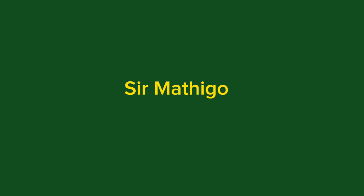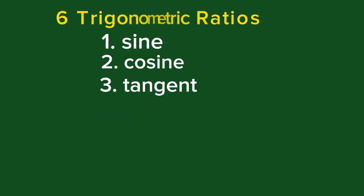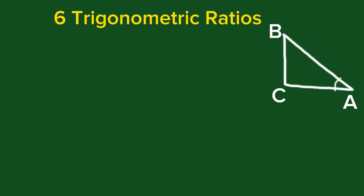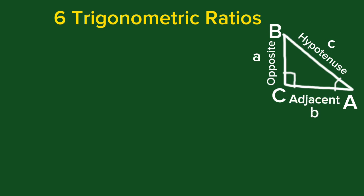Welcome to Sir Matigo's channel. Today I would like to discuss the six trigonometric ratios. The six trigonometric ratios are taken from the right triangle. Let's have this right triangle ABC where angle C is a right angle. The diagonal side is called the hypotenuse, which is side C. The side opposite to angle A is side A, which we call the opposite side. The side adjacent to A and C is side B, which we call the adjacent side.